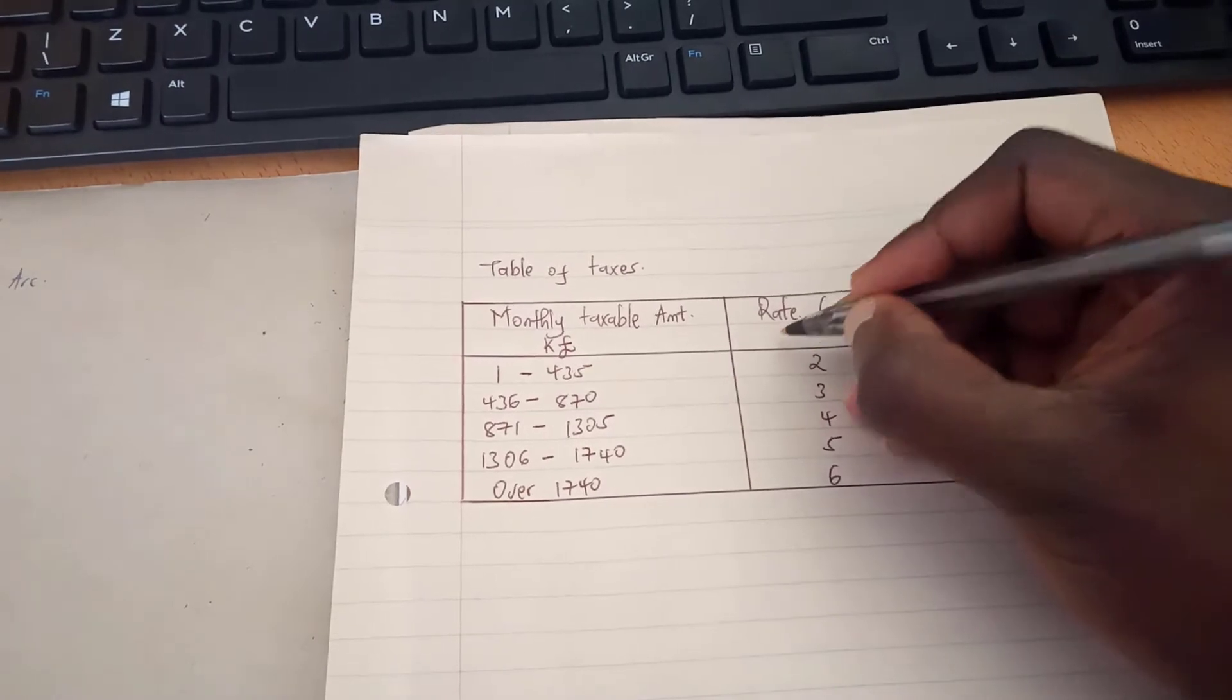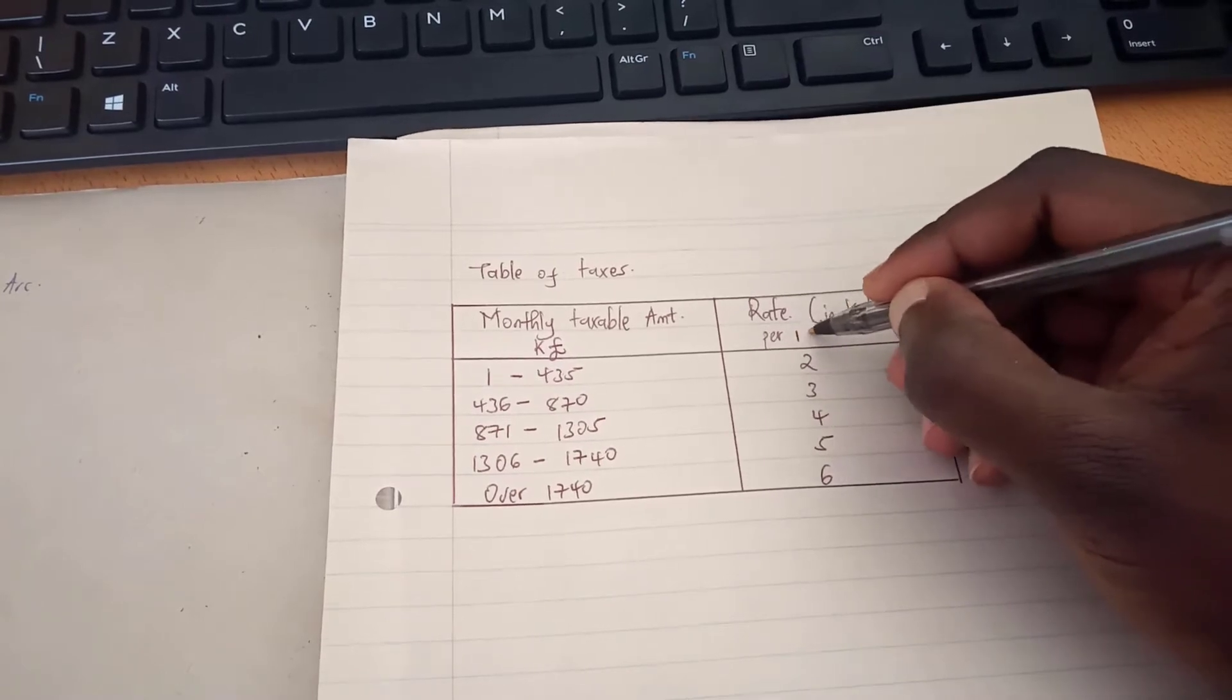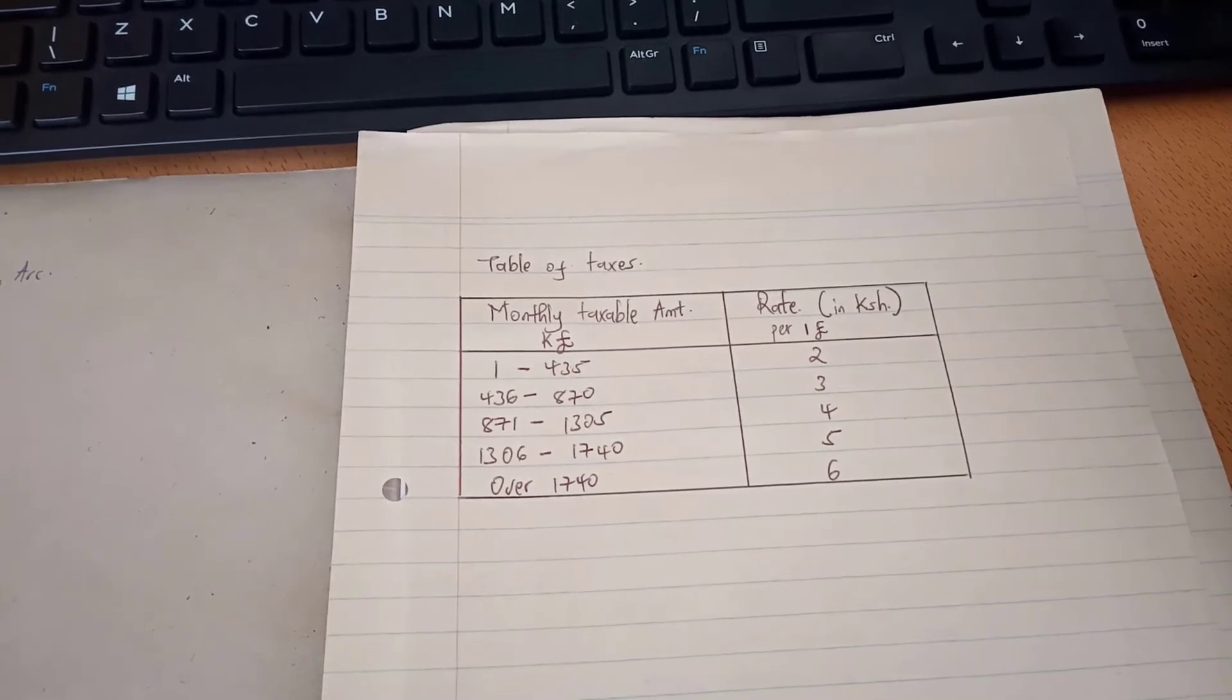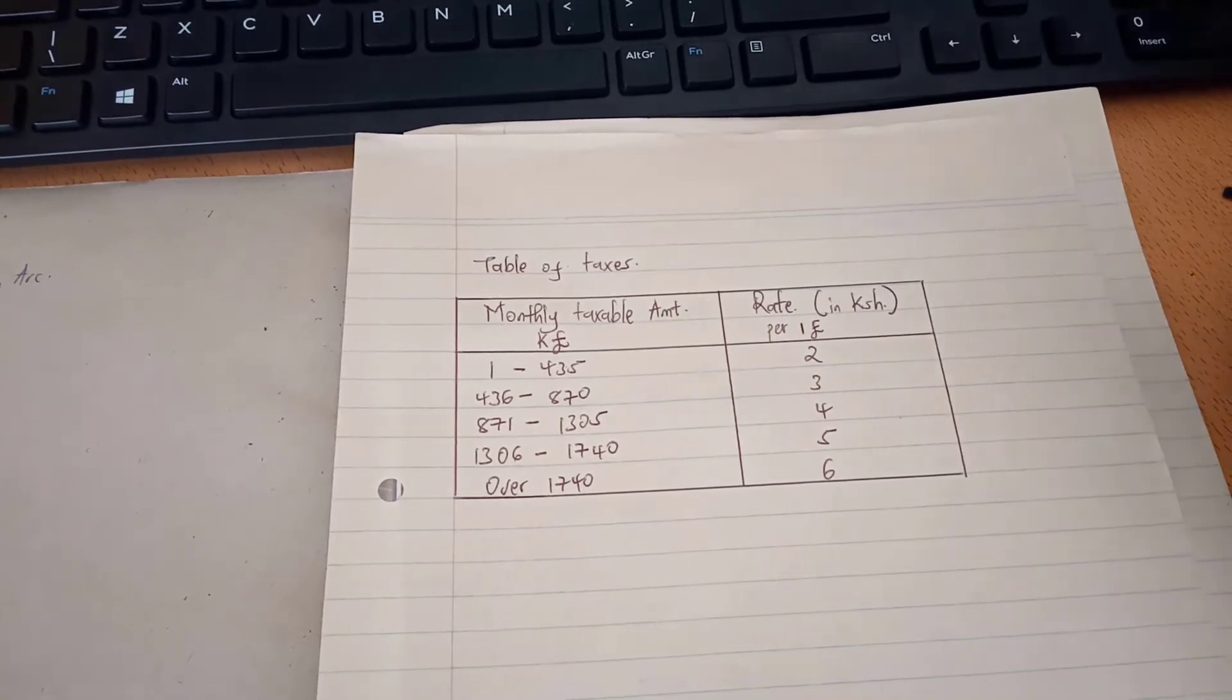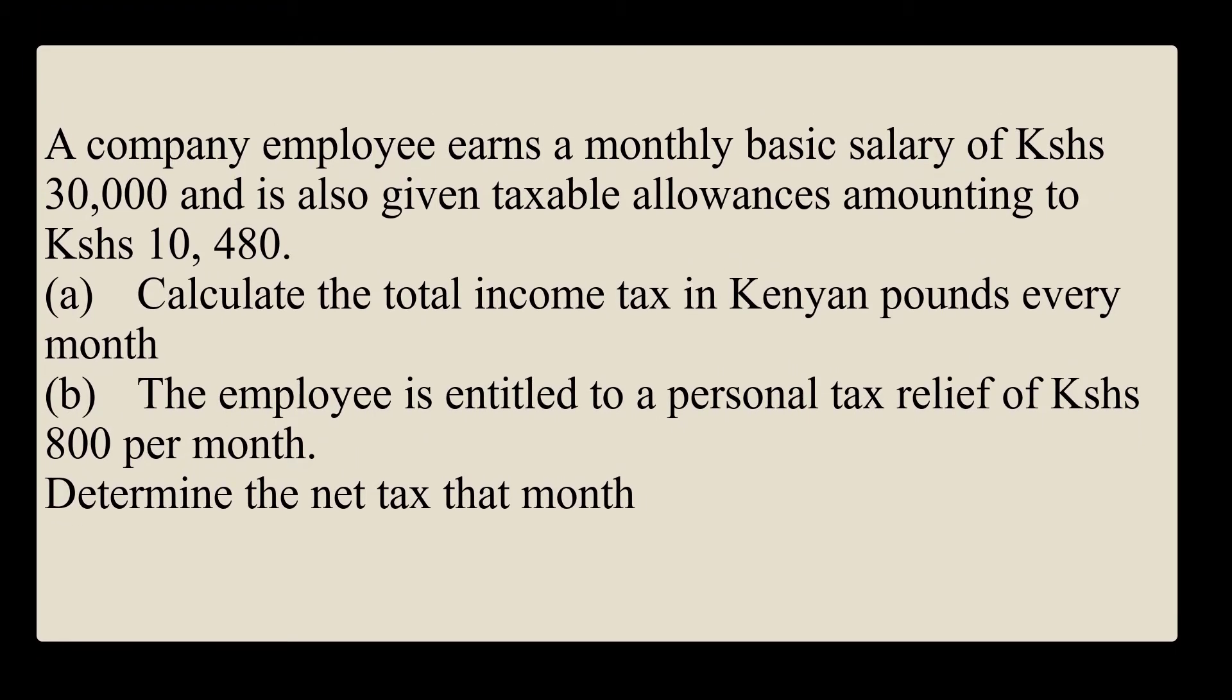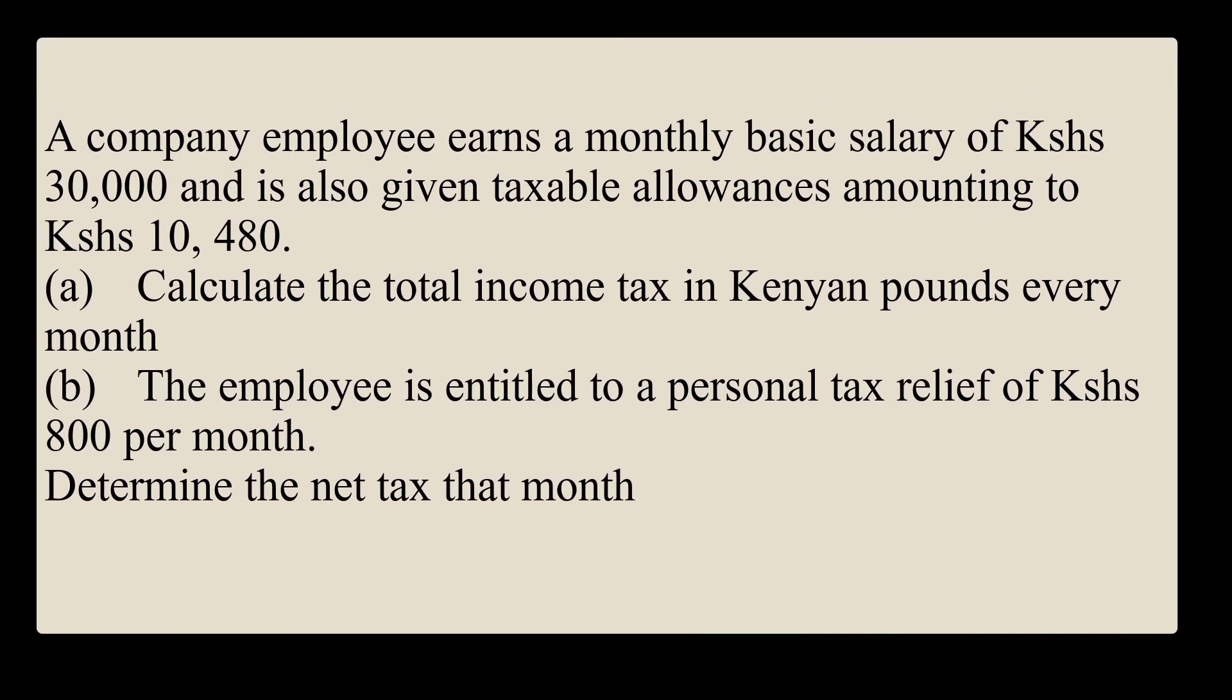And this rate is supposed to be per pound, for every one pound. So there is a question that is going to pop up on the screen and I'd want you to make sure you pause the video, then write the question down and we'll get to do it and calculate it. I hope you'll enjoy this whole tutorial.